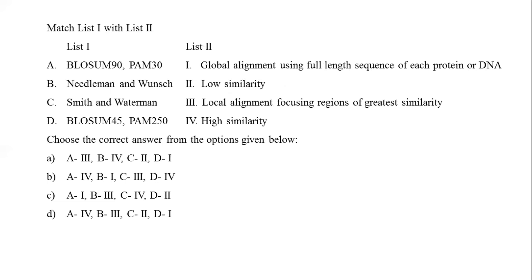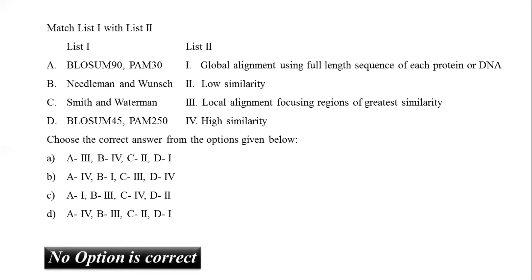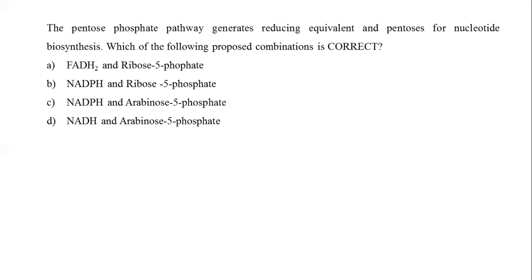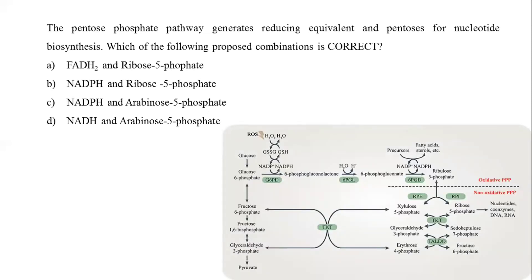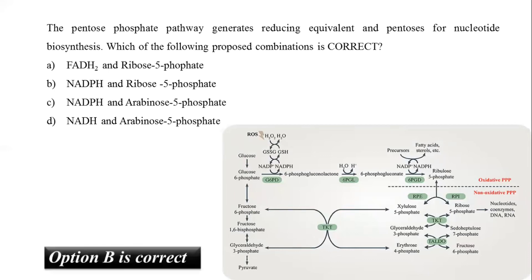The next match list question was dropped, so none of these is the correct answer. Moving on: the pentose phosphate pathway generates reducing equivalents and pentose for nucleotide biosynthesis. The PPP branches after the first step of glycolysis and produces ribose-5-phosphate and NADPH for biosynthesis and redox regulation. The correct answer is option B: NADPH and ribose-5-phosphate.